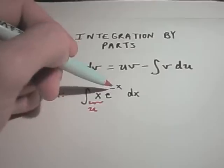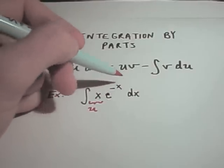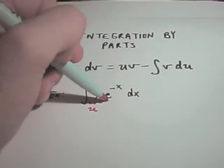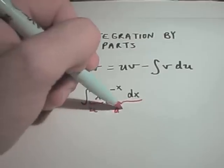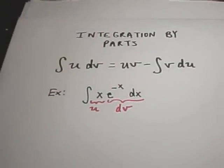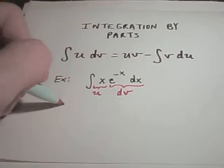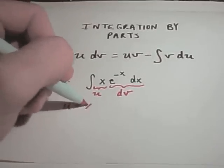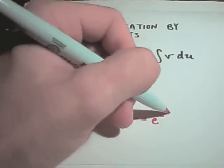If I pick u to be e to the negative x, I'm simply going to get negative e to the negative x, which doesn't seem any easier. So, I'm going to pick the e to the negative x dx stuff. I'm going to call that dv. Okay, so now I'm going to write down that my u is equal to x, my dv is equal to e to the negative x.